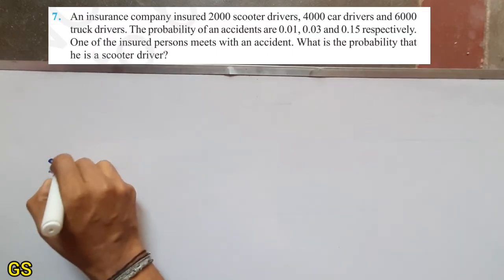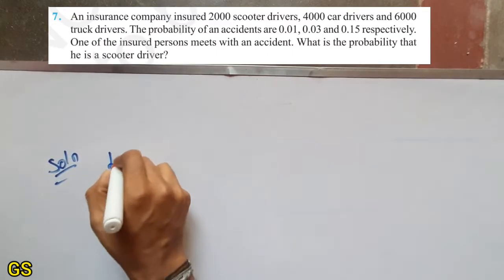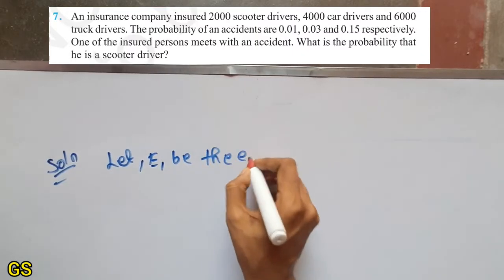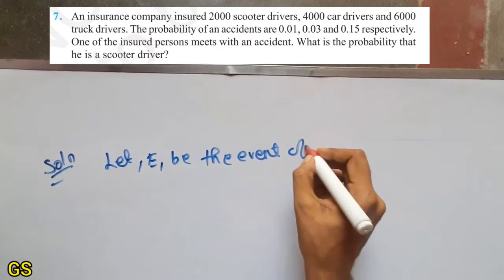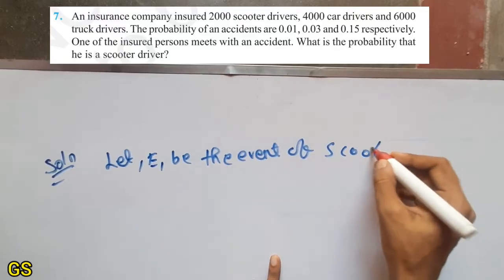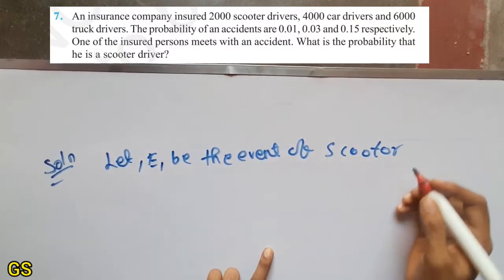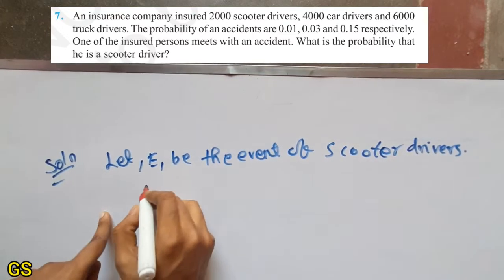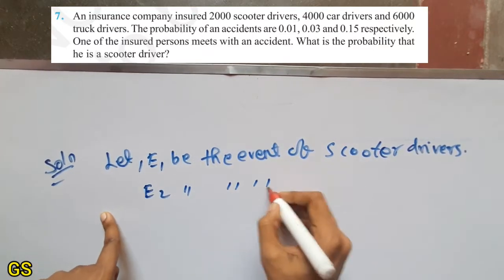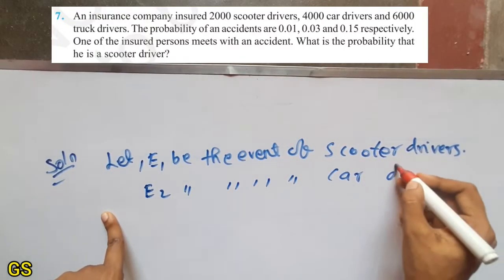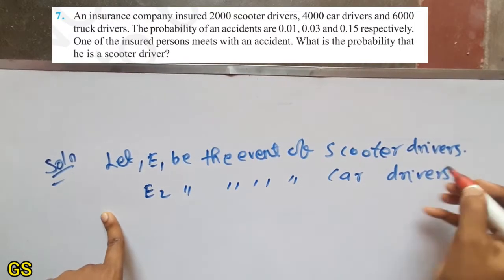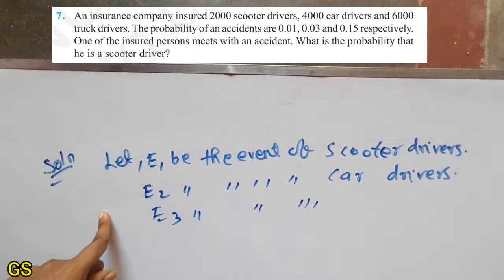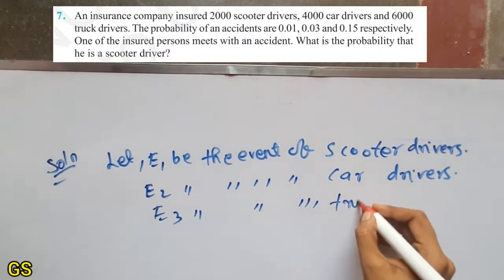Let E1 be the event of scooter drivers. And let E2 be the event of car drivers. Let E3 be the event of truck drivers.